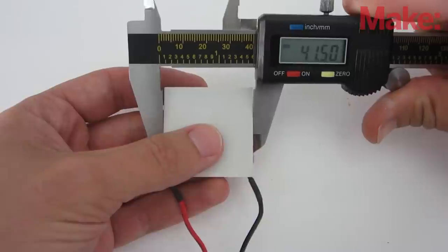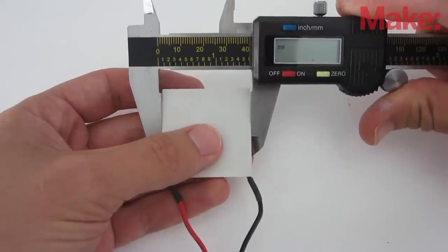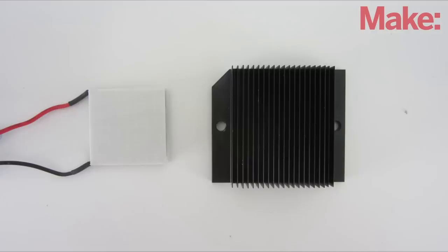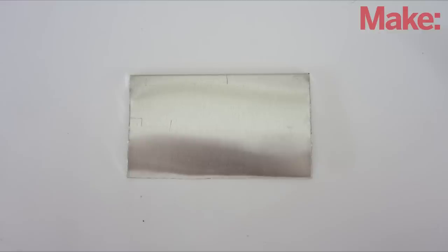Start by measuring the dimensions of your thermoelectric element. Mine was 40mm by 40mm. Now find a heat sink that's slightly larger than this. Also, get a piece of 1/16th aluminum plate that's at least a half inch larger than the thermoelectric element on each side.